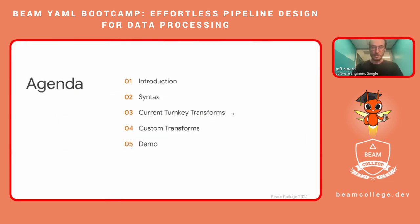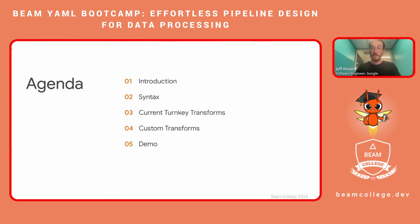Just a quick overview of what we'll talk about: I'll introduce what Beam YAML is, how to use it, some basic syntax. Then we'll turn over into current turnkey transforms — built-in transforms that you're able to use plug-and-play with your pipelines. We'll go over briefly how you can implement custom transforms, and finally I'll wrap up with a demo so you can see it in action.